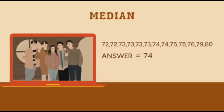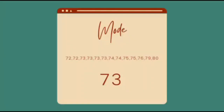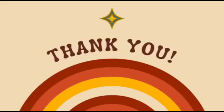Now we'll find the median. We organize from lowest to highest: 72, 72, 73, 73, 73, 73, 74, 74, 75, 75, 76, 79, 80. The median is 74. Lastly, we'll find the mode. Mode is the most repeated number, so the mode is 73. This performance task is presented by Vernon Red Valencia from 11 STEM. Thank you for watching.